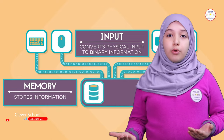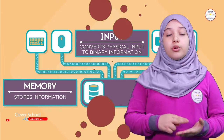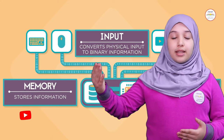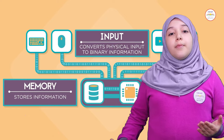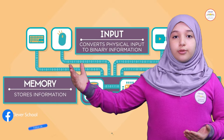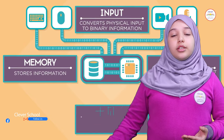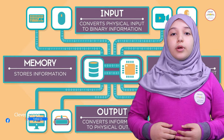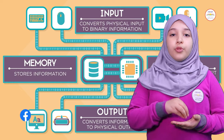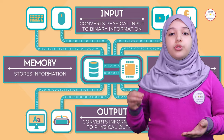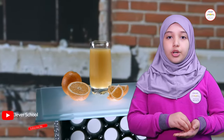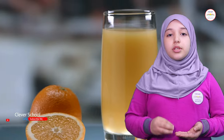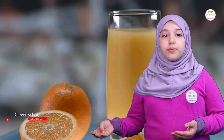You can see the output on the monitor. When you write 2 plus 2, it goes to the input, then to the processor, then to the memory and is saved, then goes to the output, and you can see the output on the monitor. For example, when you want to make orange juice, you put the orange into the juicer, then turn on the juicer for processing. When the juice is ready, it's called output.